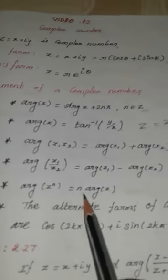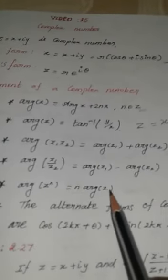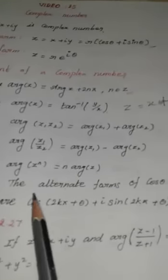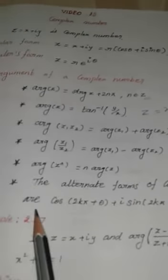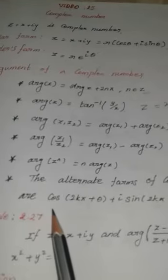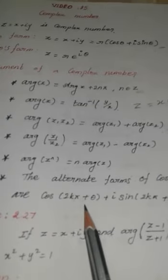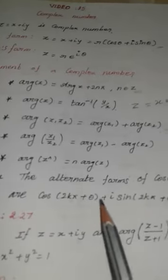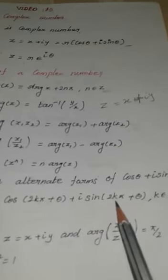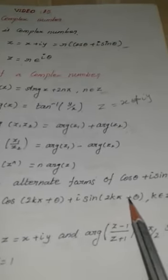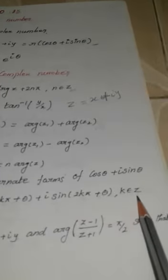Next property: argument of z to the power n equals n times the argument of z. The alternate forms of cos θ + i sin θ are cos(2kπ + θ) + i·sin(2kπ + θ), where k belongs to integers.